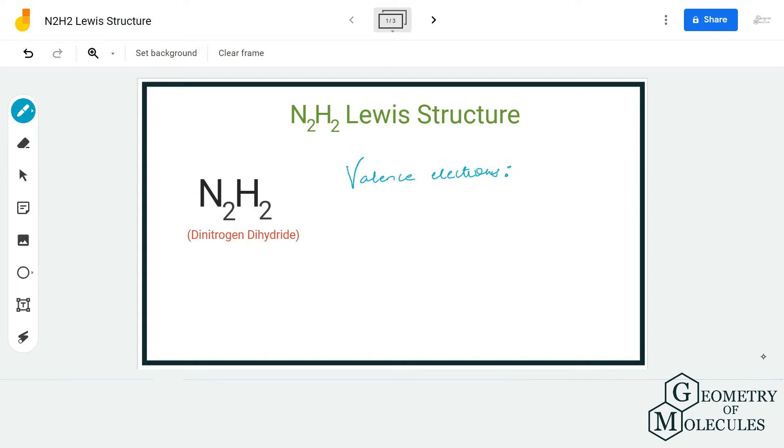Hi guys, welcome back to our channel. In today's video we are going to help you determine the Lewis structure of N2H2 molecule. It has a chemical name of dinitrogen dihydride, and to determine its Lewis structure we are first going to look at the total number of valence electrons.